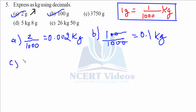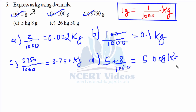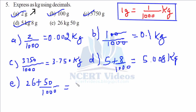For part c, 3750 over 1000 gives you 3.750 kg. For part d, 5 kg and 8 grams: 8 over 1000, not disturbing 5, gives you 5.008 kg. For part e, 26 kg and 50 grams: 50 over 1000 gives you 26.050 kg.